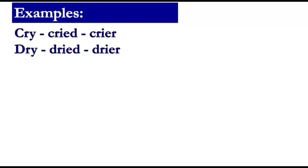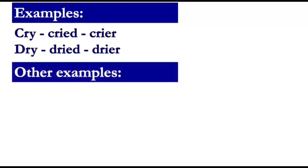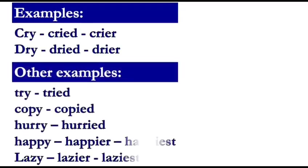'Cry' becomes 'cried' and 'crier'; 'dry' becomes 'dried' and 'dryer.' Other examples: 'try' becomes 'tried'; 'copy' becomes 'copied'; 'happy' becomes 'happier' and 'happiest'; 'lazy' becomes 'lazier' and 'laziest.' We change the letter Y into I.